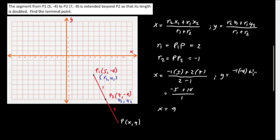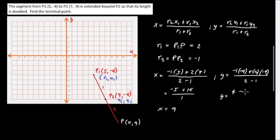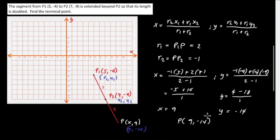Solving for X: (negative 1 times 5 plus 2 times 7) over (2 plus negative 1) equals (negative 5 plus 14) over 1 equals 9. For Y: (negative 1 times negative 4 plus 2 times negative 9) over (2 minus 1) equals (4 minus 18) over 1 equals negative 14. Therefore point P is (9, negative 14).